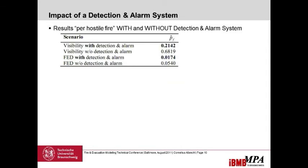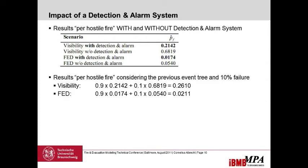The results — per-hostile-fire, with and without the detection system — show that when the detection system is added and functional, the probability goes down from about 70% to 21% for visibility failure, and for incapacitation it goes down from 5% to about 2%. Accounting for the 10% system failure probability: in 90% of cases we use the lower failure probability, and in 10% we use the 70%. In total, we get about 26% failure for visibility and about 2% for FED, already including the 10% alarm system failure.